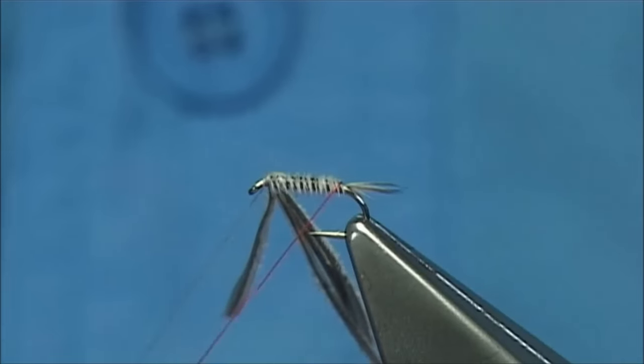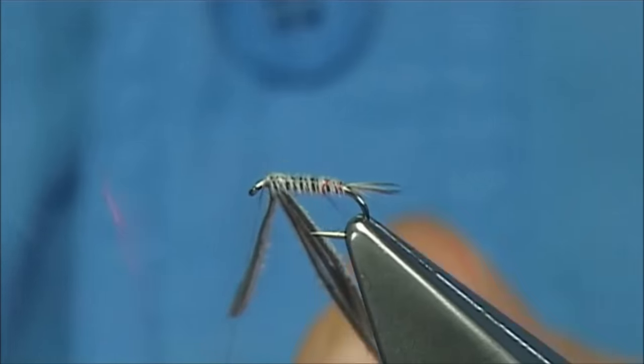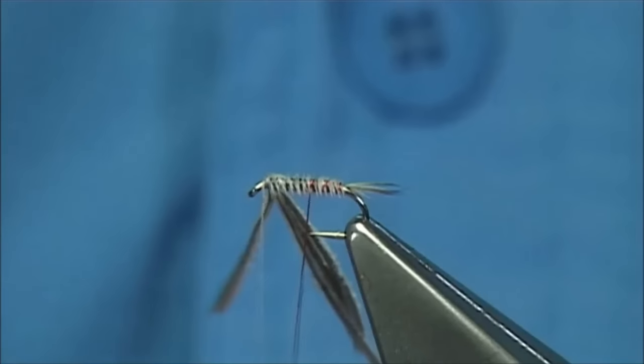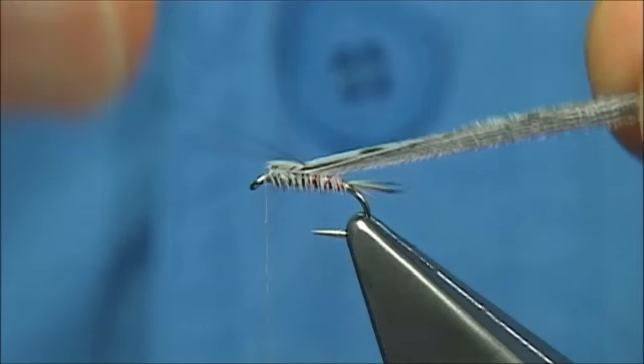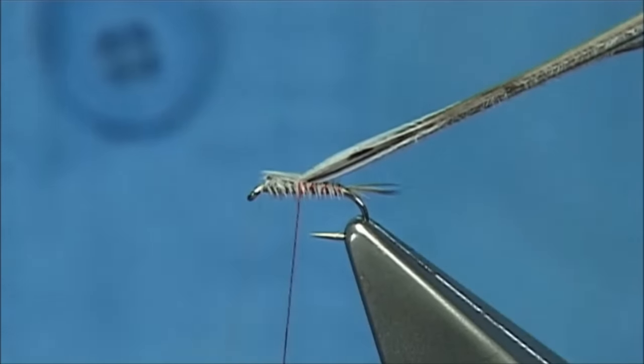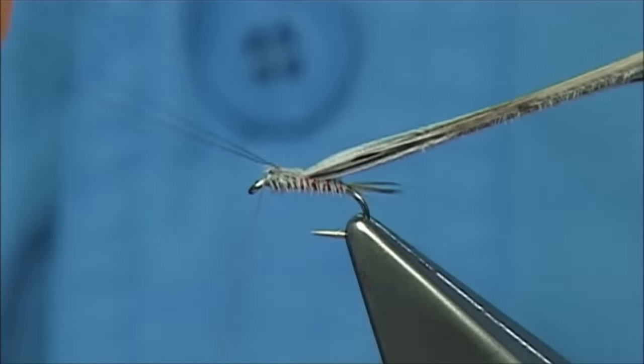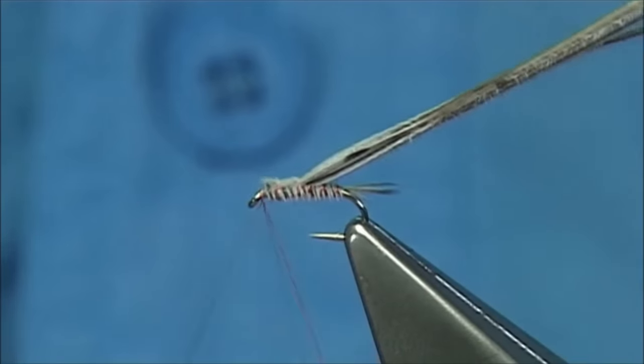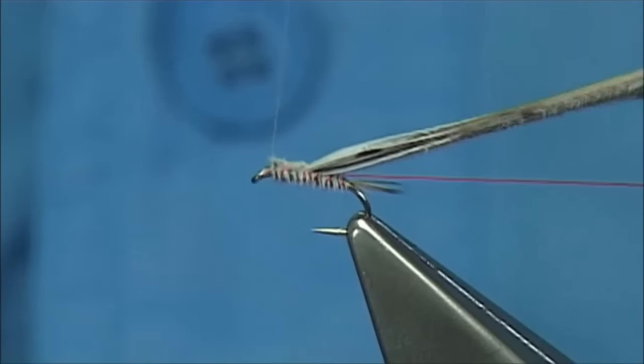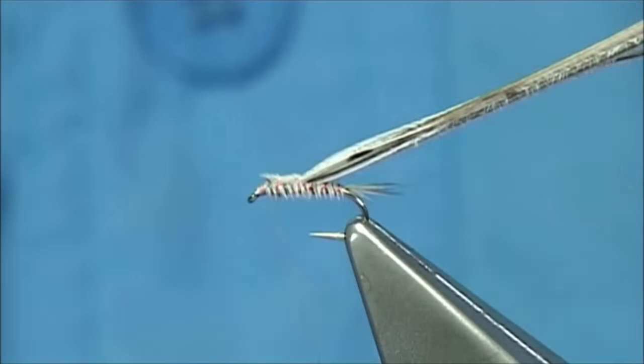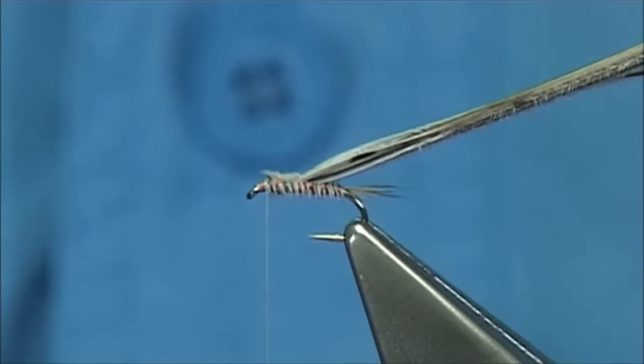And then we bring our wire rib up through. Coming into our basically third turn there. We want to form the thorax. So we draw this back. We just carry on, taking the wire up to the eye. Cross the thread, couple of turns, fold it back. Break it off, because it's tucked back, it will not pull out.